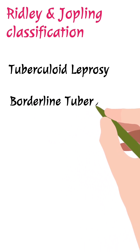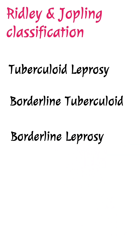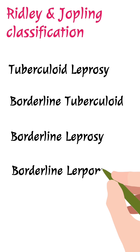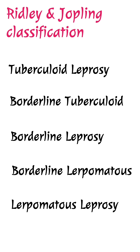According to the Ridley-Jopling classification, leprosy is divided into five categories: tuberculoid leprosy, borderline tuberculoid leprosy — where immunity is high — then borderline leprosy, borderline lepromatous leprosy, and finally lepromatous leprosy. Immunity is very low in borderline lepromatous and lepromatous leprosy, so the bacilli load is very high in lepromatous leprosy, while it is low in tuberculoid leprosy.